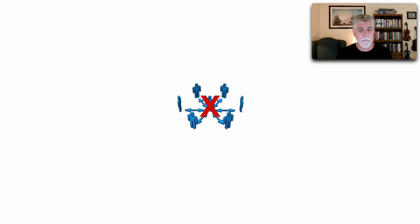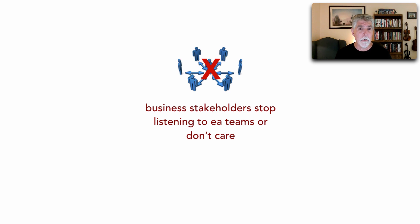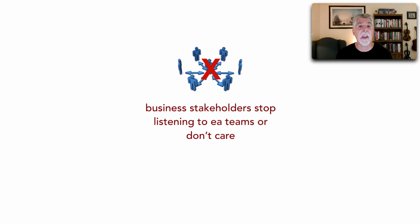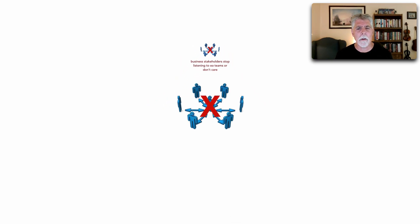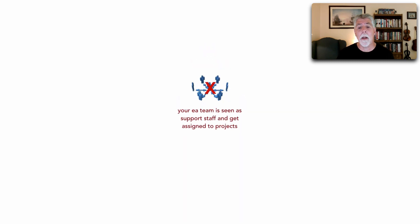The first warning sign is that business stakeholders — who enterprise architects need to continually collaborate with — stop listening to enterprise architecture teams or don't really seem to care much. This 'they're in our way' attitude is the first warning sign to look for.